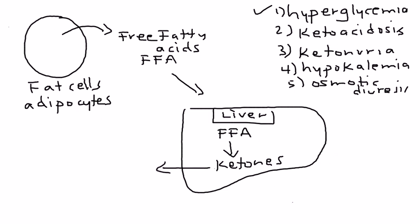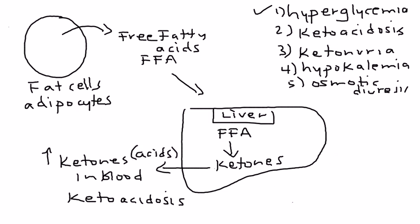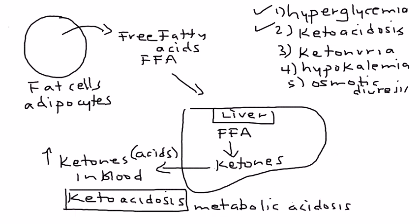Then these ketones then go into the bloodstream. And that essentially is known as ketoacidosis, because ketones are acids. So, that's the next part of the five things. Now, another name for ketoacidosis is metabolic acidosis. Just in case you are wondering if the two terms mean the same. They do. It's the same thing.